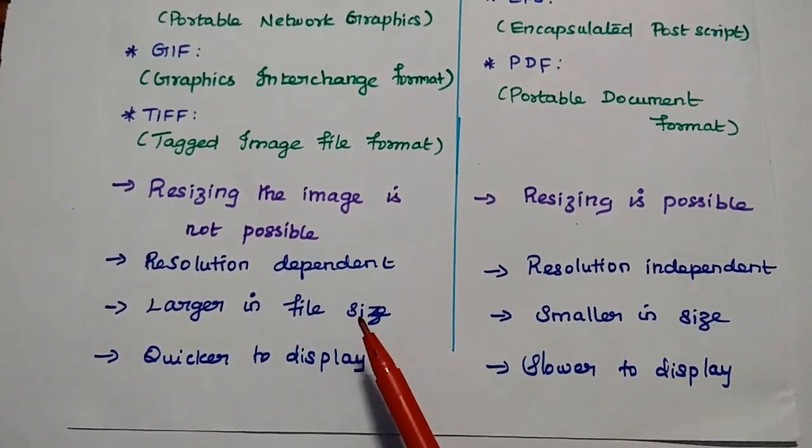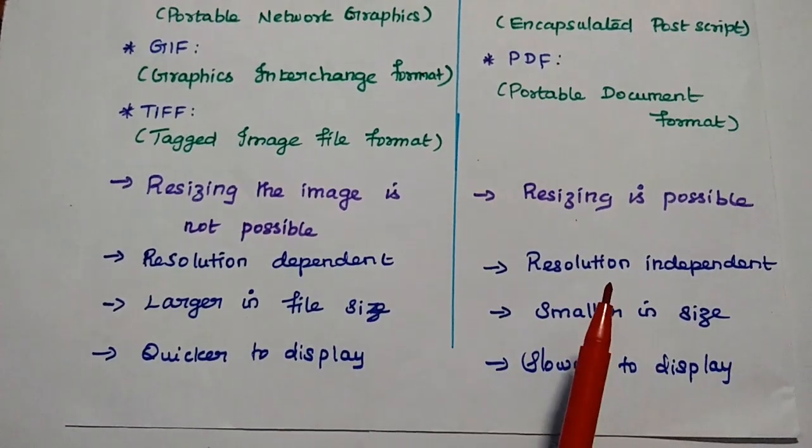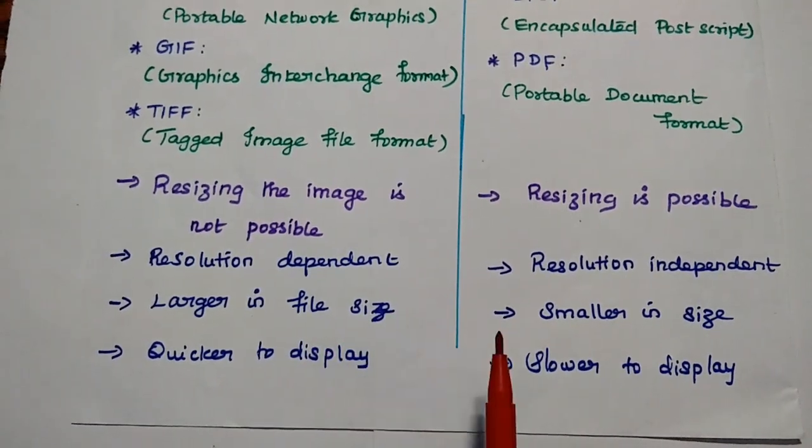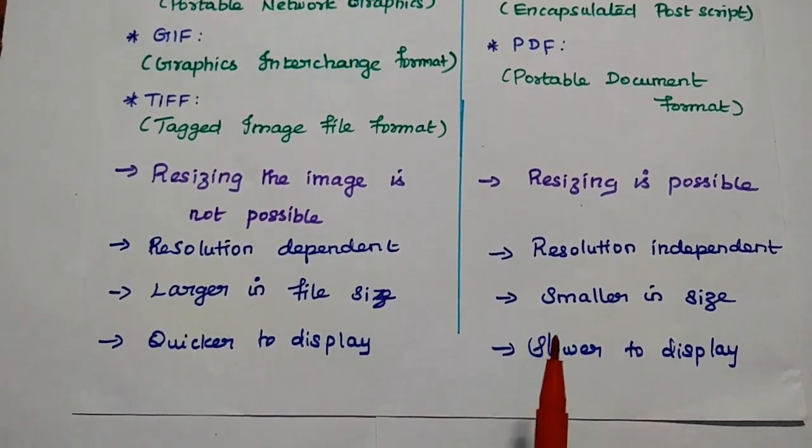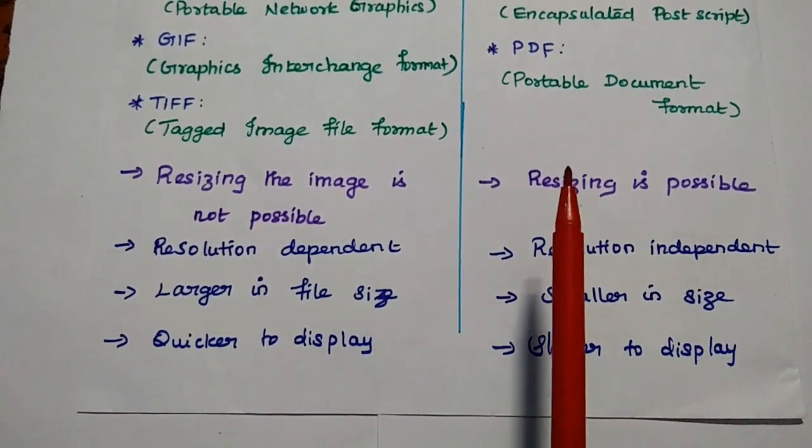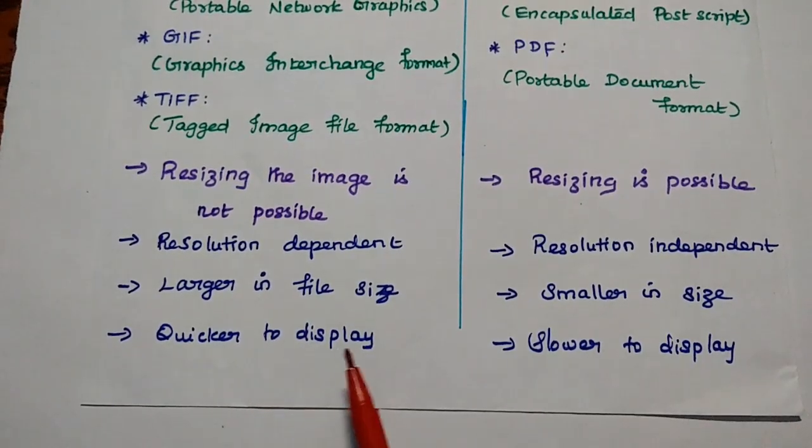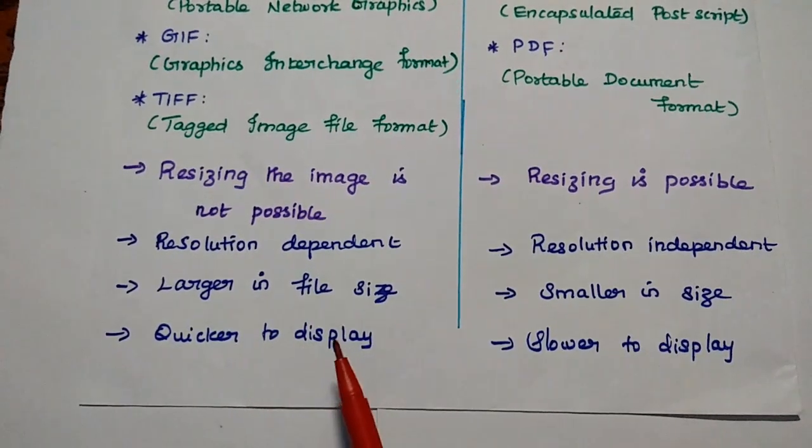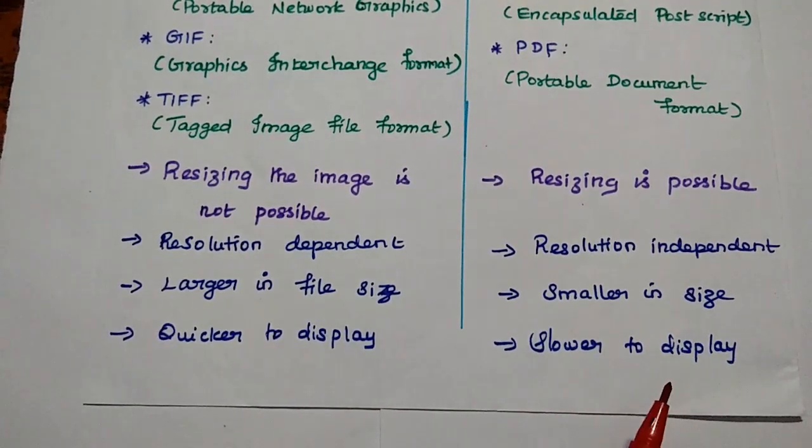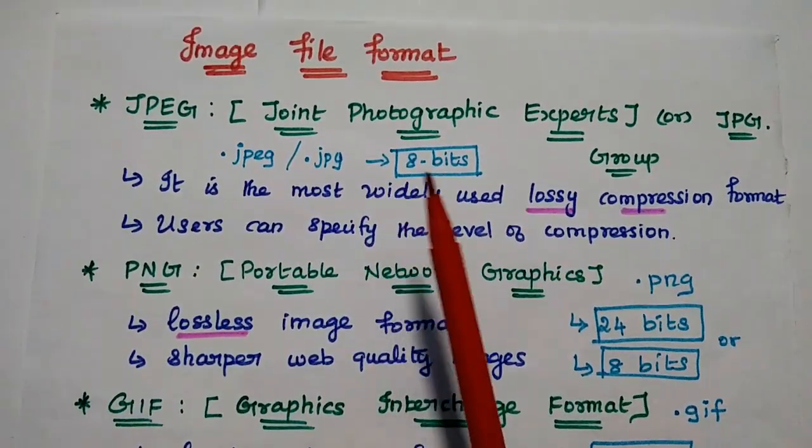Here the raster image files are resolution dependent. Here, it is resolution independent. Raster image files are larger in size. Here, the vector image files are smaller in size. That's why we prefer to transfer the document in terms of PDF. Next, raster files are quicker to display. It can be quickly opened. But here, in this vector image files, it is slower to display. Let's take the overview of the important image file formats.